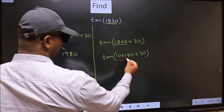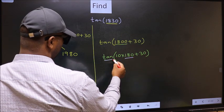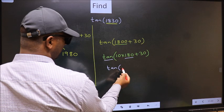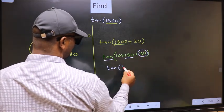Next, here we have 180. So tan is not going to change. It will remain tan. And inside, we get this angle, 30.